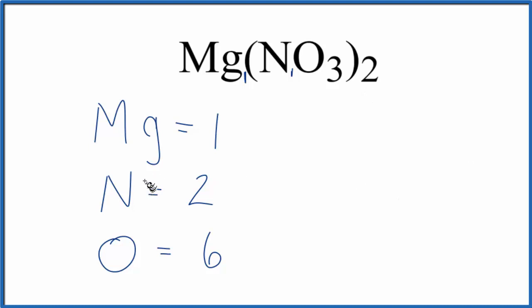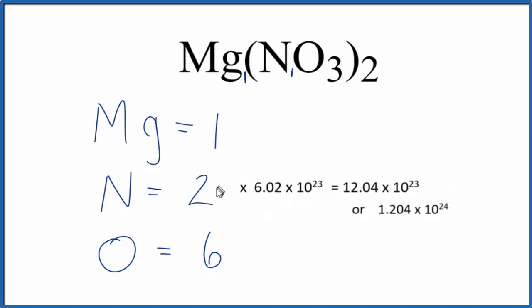Sometimes you're asked to figure out the number of atoms, say nitrogen, in one mole of magnesium nitrate. If you're asked to do that, you take two and multiply by Avogadro's number.